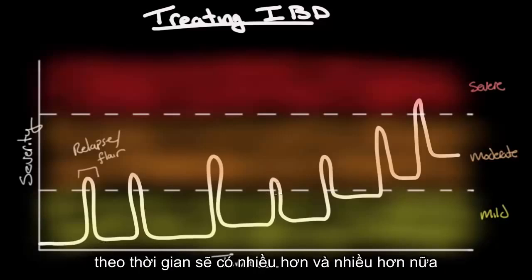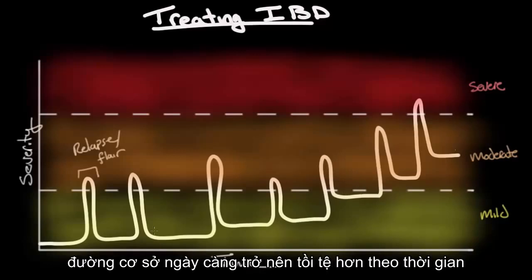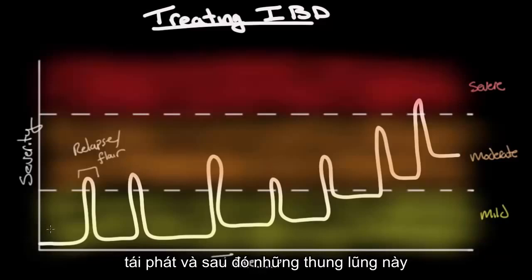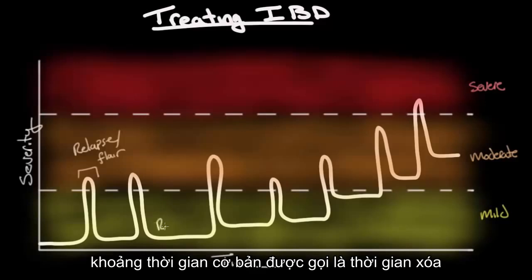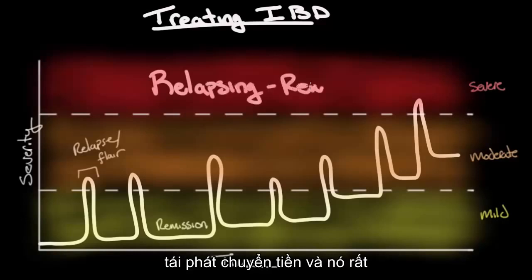Over time there'll be more and more of these flares and relapses. And occasionally, when the relapse resolves, the severity of the disease — the new baseline — gets worse and worse over time. So these peaks are known as flares or relapses, and these valleys, these baseline periods, are known as remissions. This disease pattern is known as relapsing-remitting.